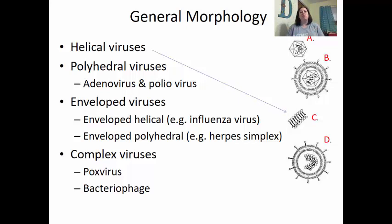We also see that some are what we call polyhedral viruses. Polyhedral viruses have about 20 sides to them. They look like a sphere but are actually a combination of lots of small triangles put together. Some examples of these are adenovirus, which causes the common cold, and poliovirus.